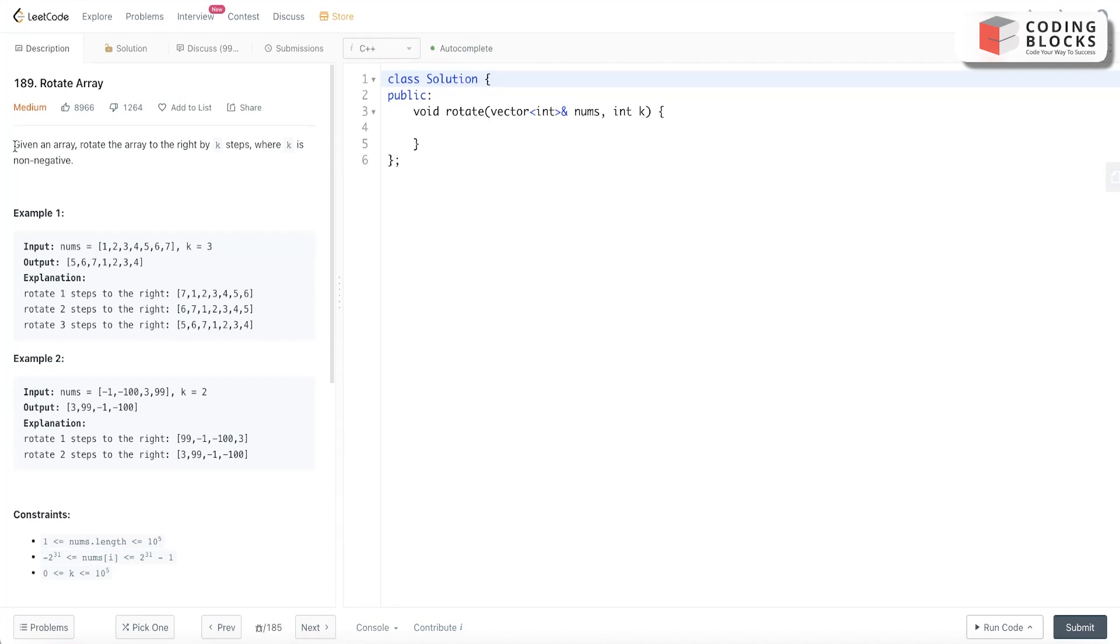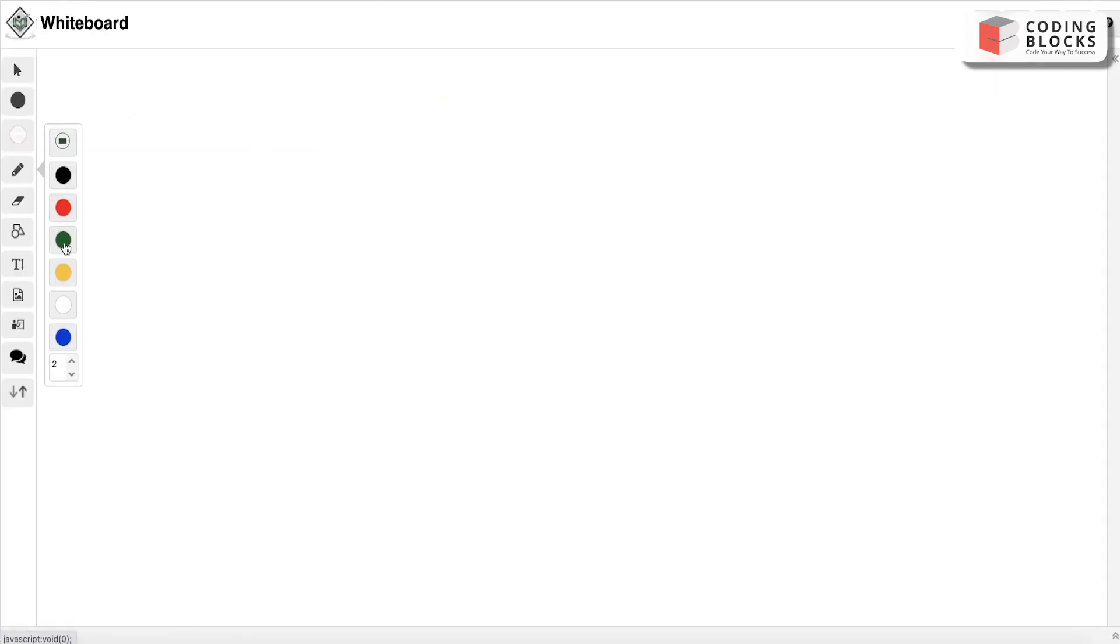It says we have been given an array and we need to rotate it to the right by K steps. We need to rotate it by K steps. Let's take one, two, three, four, five, six, and seven, and K is given to us as three. Let's try to visualize what is happening here.